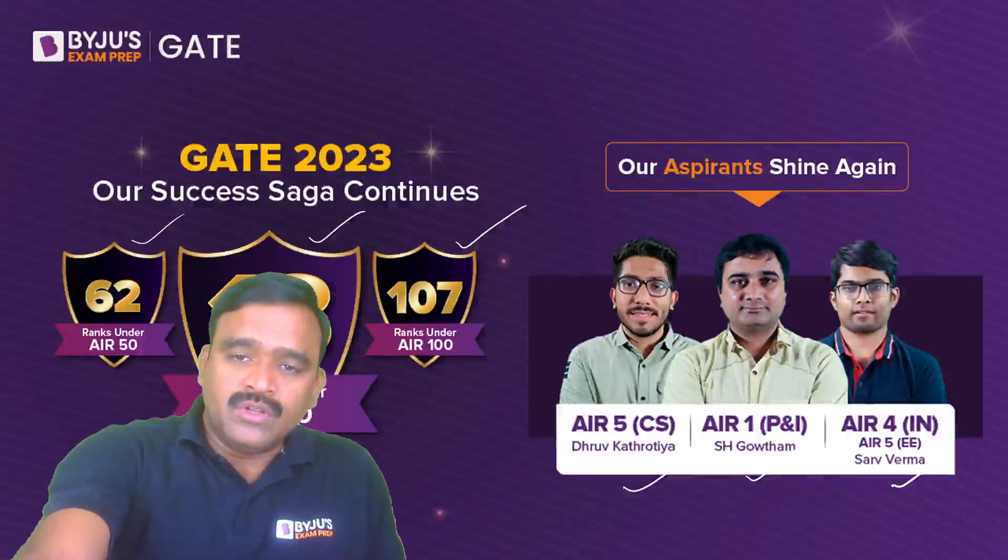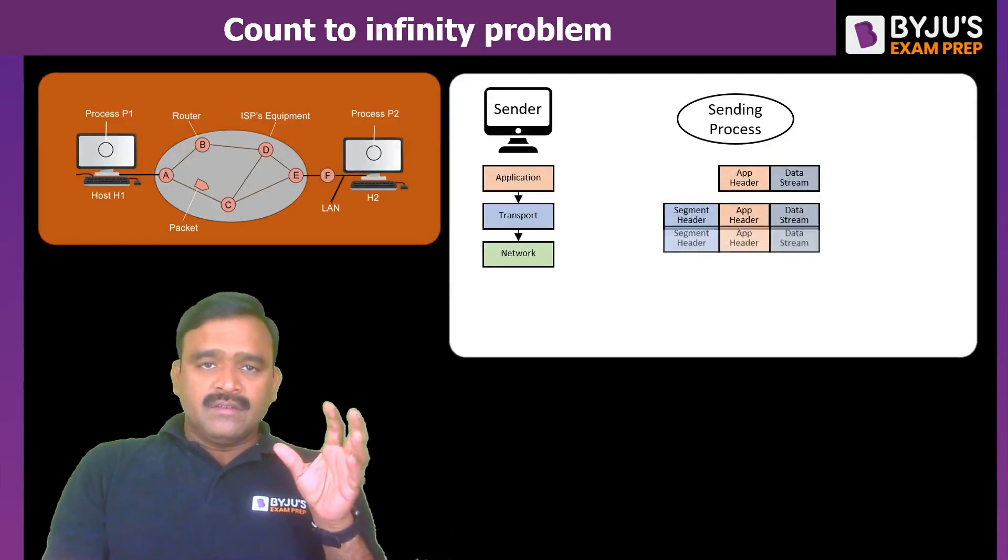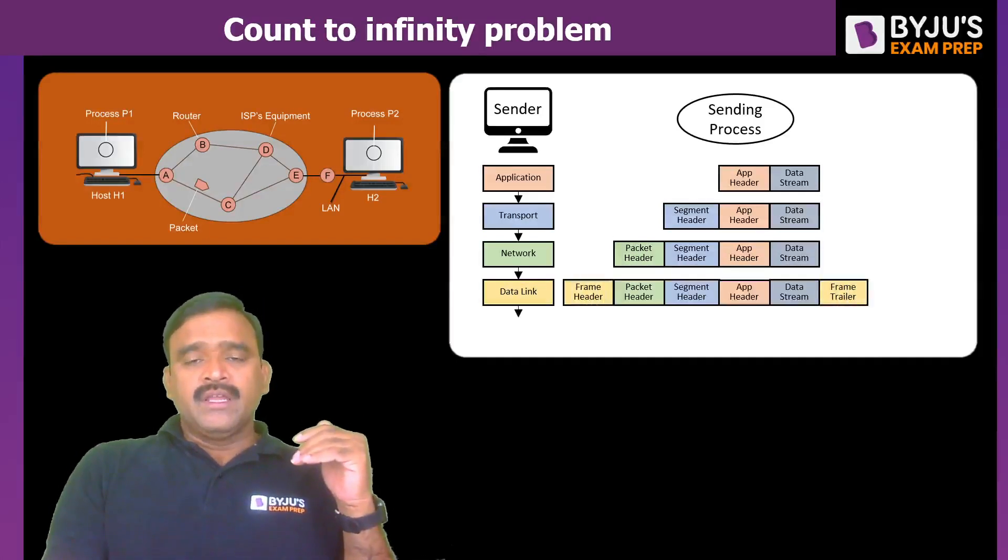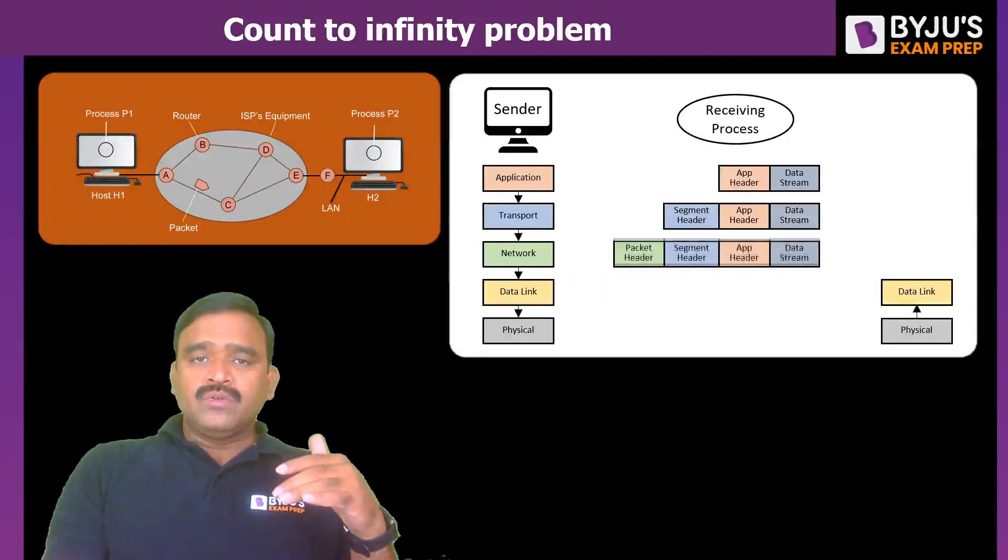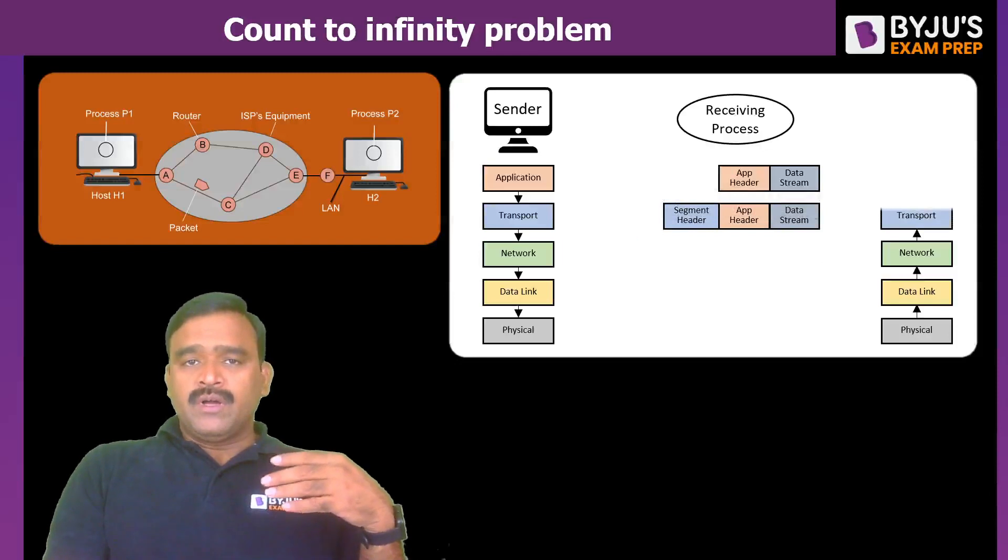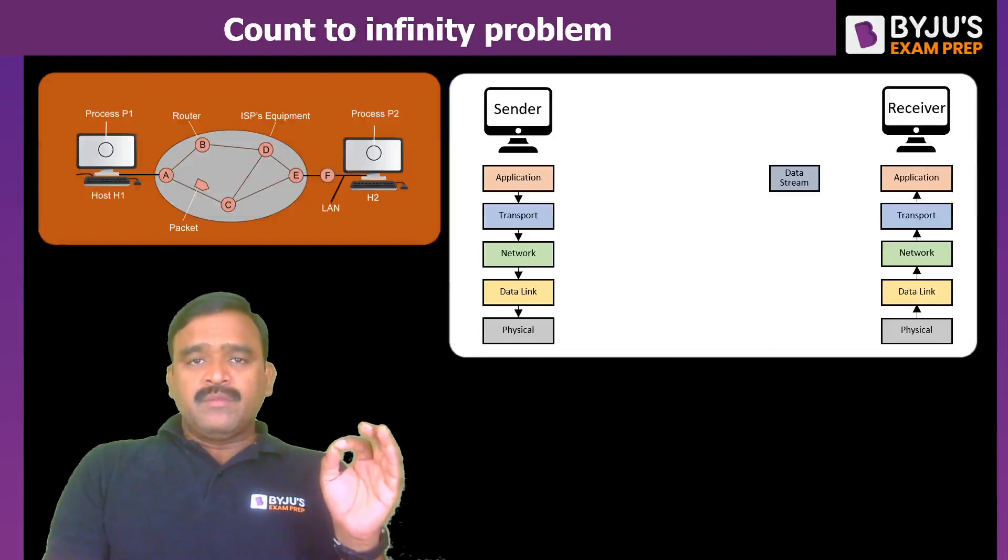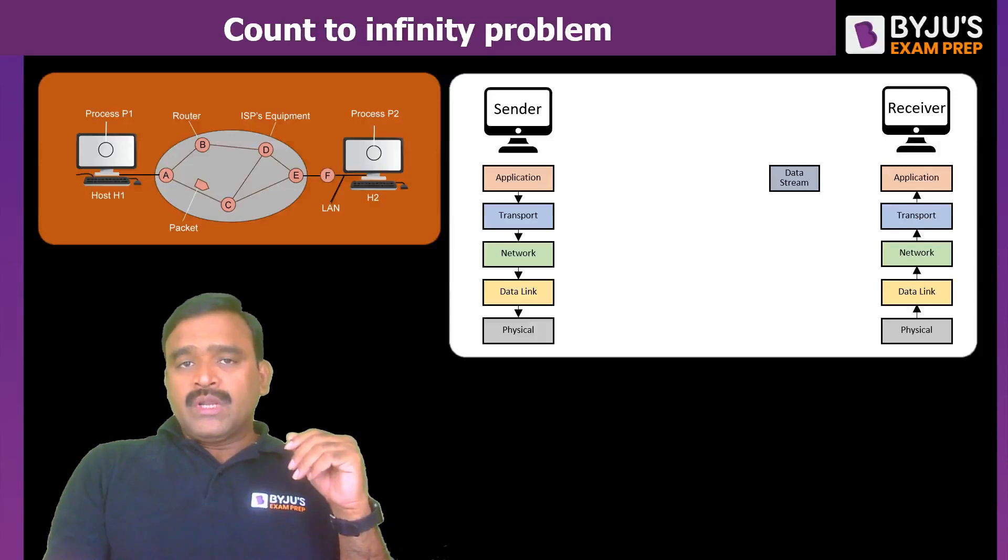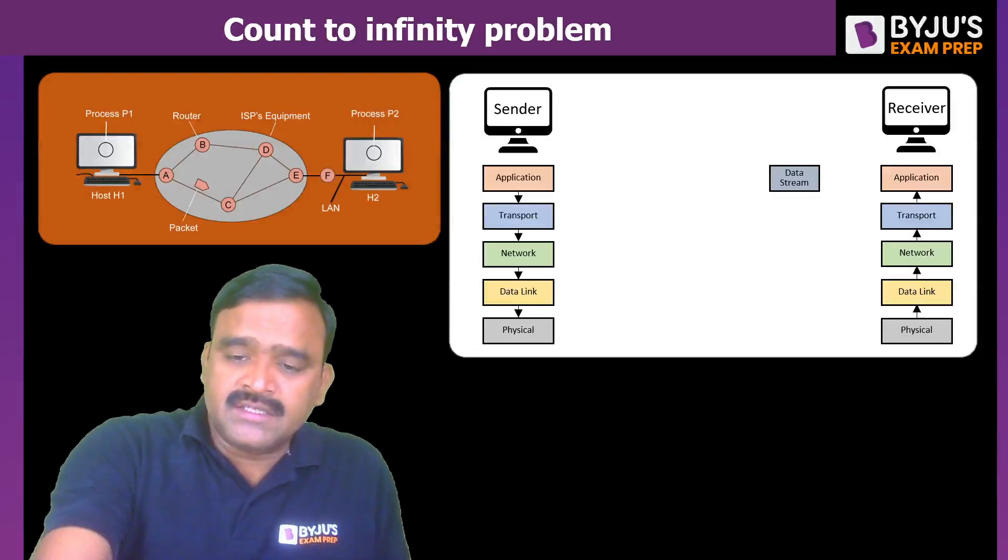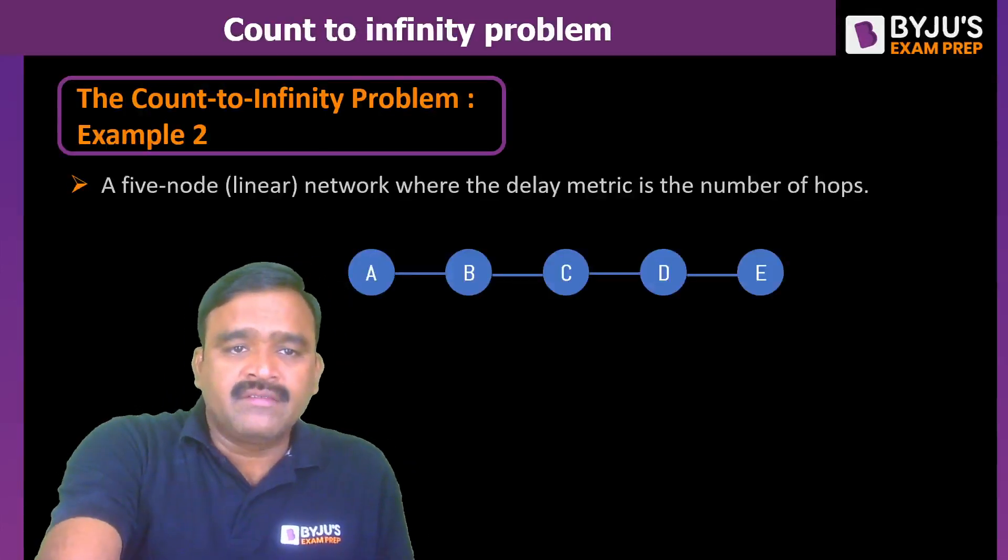Today's topic is about identifying how the infinity problem exists in distance vector routing. Please be in the session till the end and also do subscribe the channel, share with your friends. I hope I am audible and visible to every one of you. You can just press the bell button for getting the notifications related to this after the subscription. Also, do like this session, share with your friends. You will get an advantage of accessing the free classes when you just subscribe it. Now let us see a count to infinity problem, different examples.